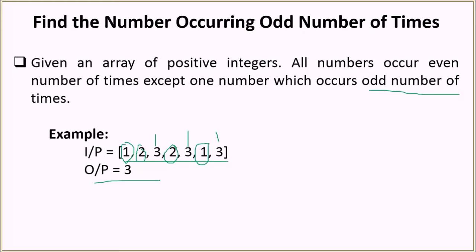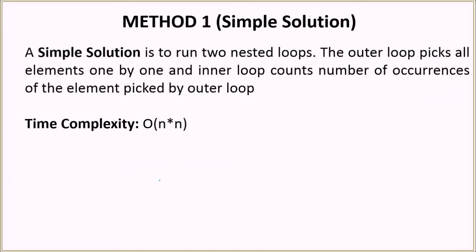So kind of an easy problem. Let's look at the solutions. The simple brute force solution would be to run two nested loops. The outer loop will pick all the elements one by one, and the inner loop counts the number of occurrences of the element picked by the outer loop. In this solution, we will be running two loops. And thus the time complexity of this solution will be order of n squared, because we are running one loop inside another loop.